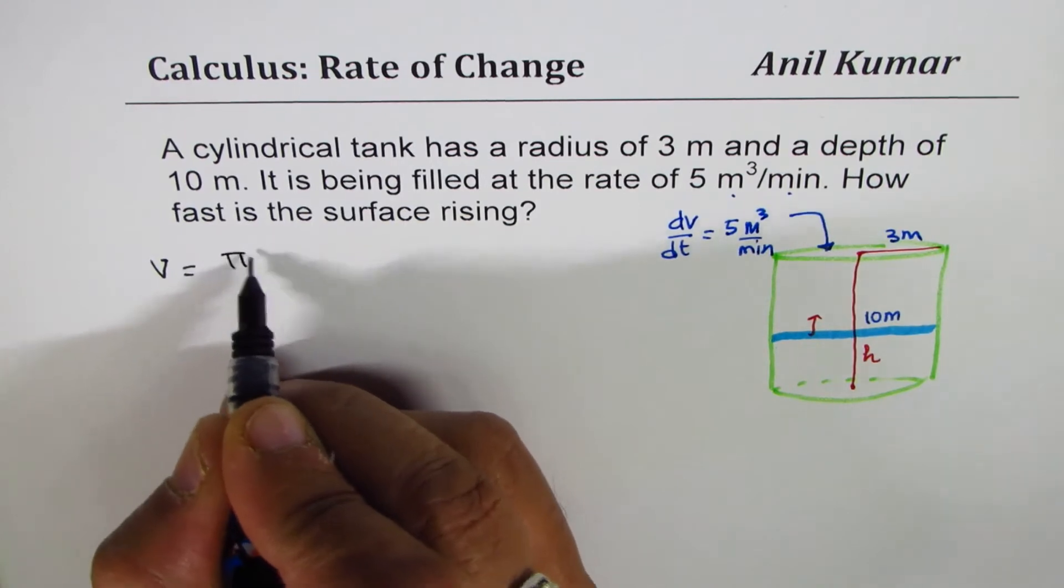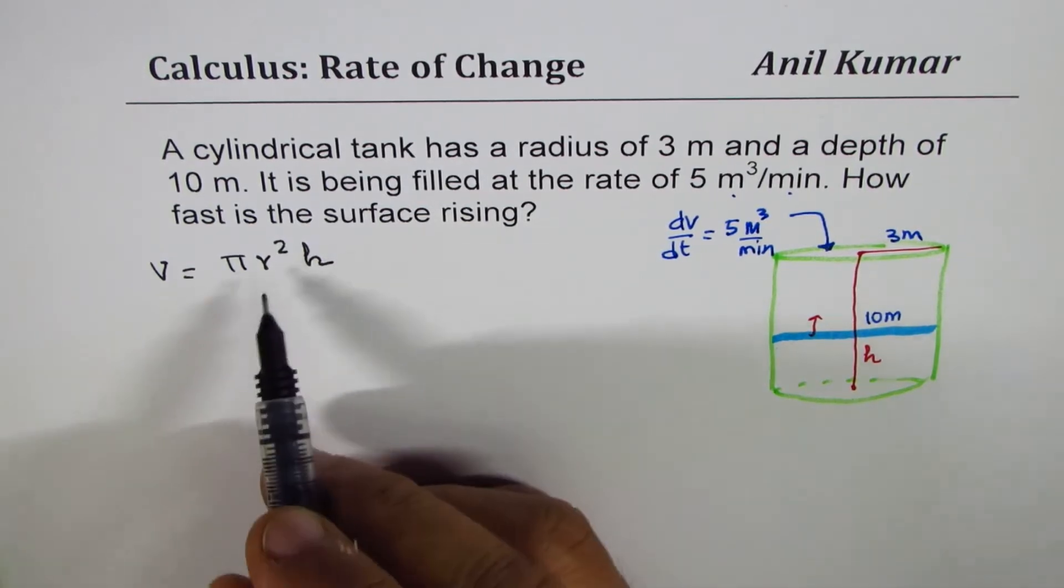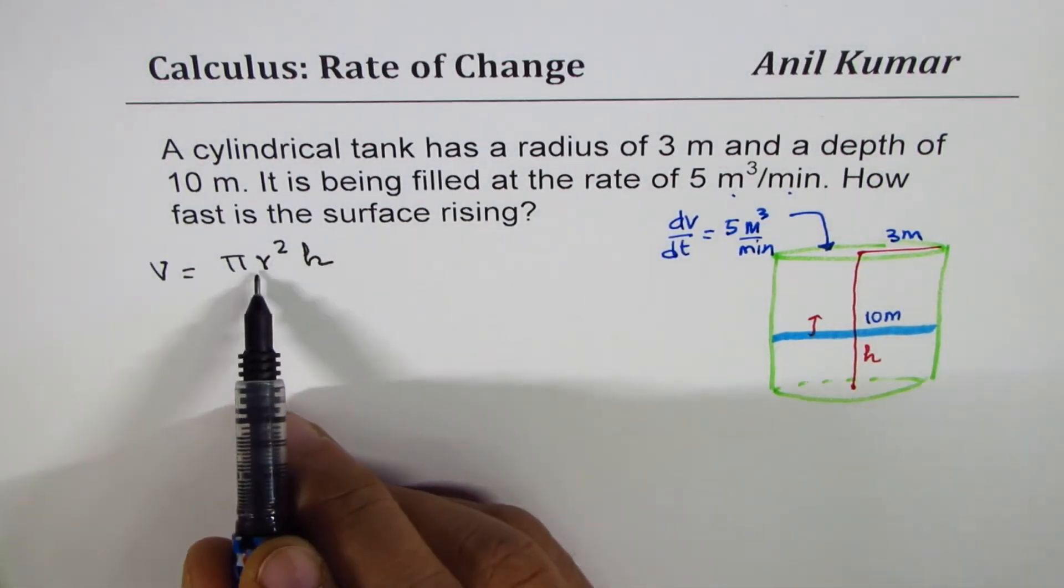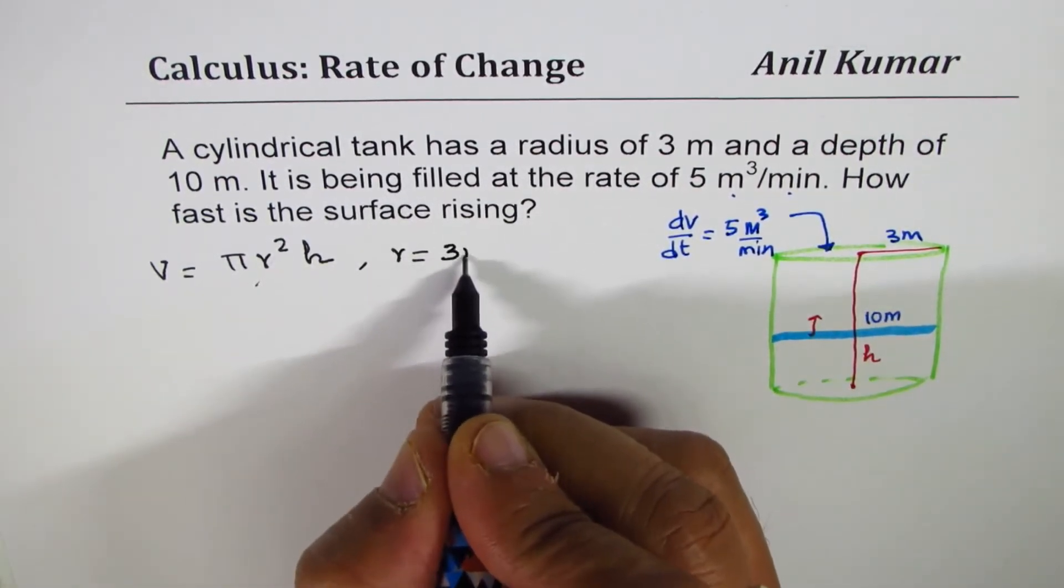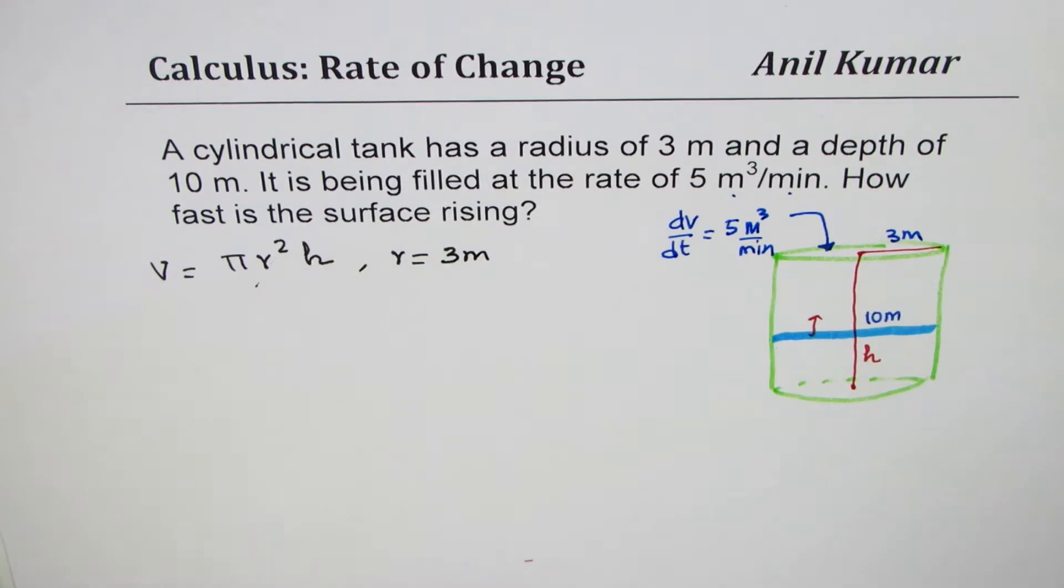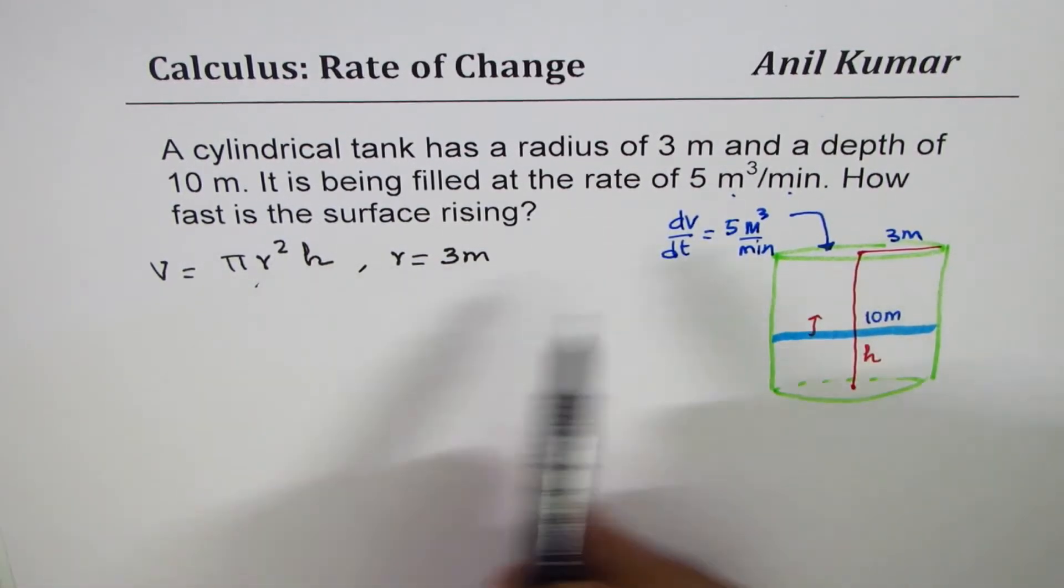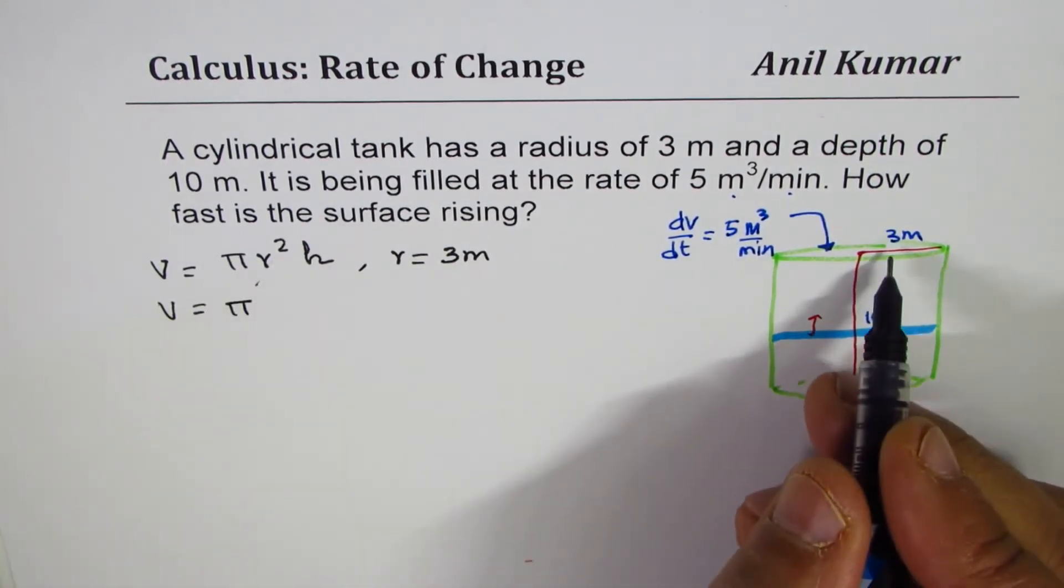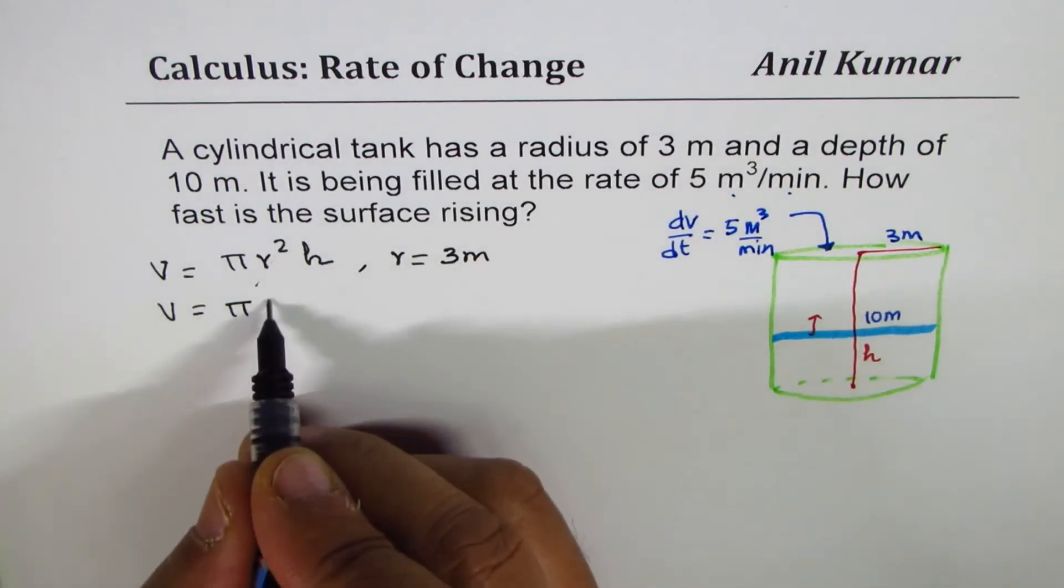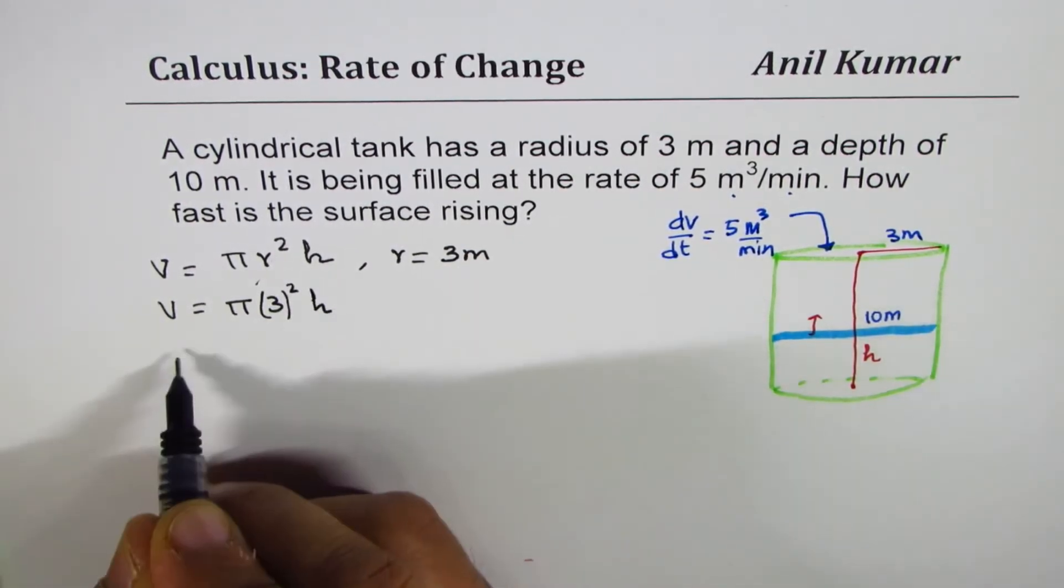Now we have two variables here. r is constant, where r in this case is constant, it is 3 meters. So r is not a variable actually, it is constant. You could replace r with 3. So in this case, volume will be π(3)²h.